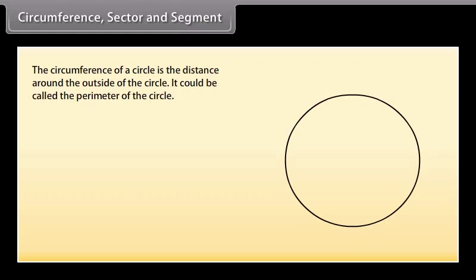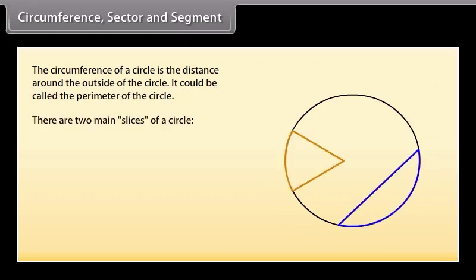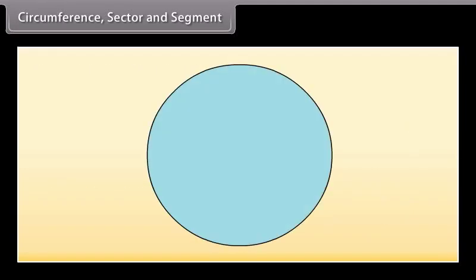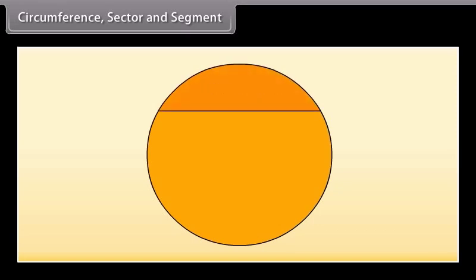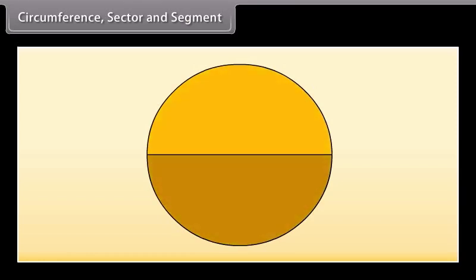Circumference, sector, and segment. The circumference of a circle is the distance around the outside of the circle — it could be called the perimeter of the circle. There are two main slices of a circle: the pizza slice and the slice made by a chord. The pizza slice is called a sector, and the slice made by a chord is called a segment. There are two types of sectors: the minor sector and the major sector. Similarly, there are two types of segments: the minor segment and the major segment. When both arcs are equal, they form two semi-circles.